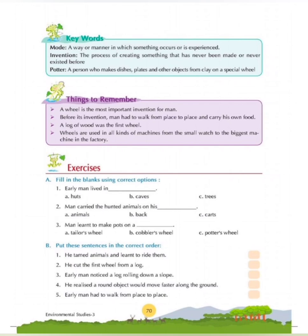Question A: Fill in the blanks using the correct options. First, early man lived in — huts, caves or trees. So early man lived in caves, because at that time he didn't know how to make a house and to protect himself from wild animals, he used to live in caves. Second, man carried the hunted animals on his — animals, back or cart. So man carried them on his back. Third, man learned to make pots on a — tailor's wheel, cobbler's wheel or potter's wheel. A tailor is a person who stitches cloth; a cobbler is a person who mends shoes; a potter is a person who makes objects using clay. So the answer is potter's wheel.